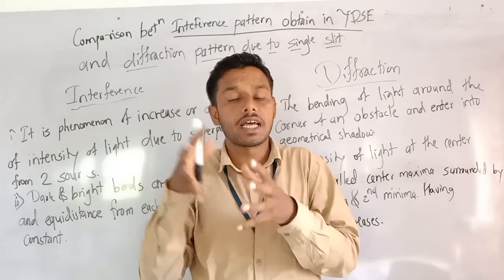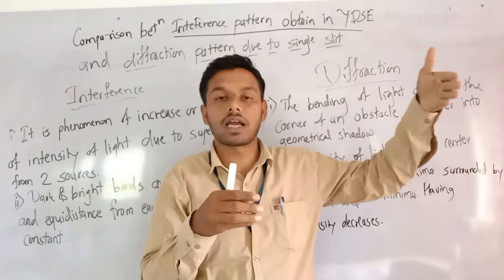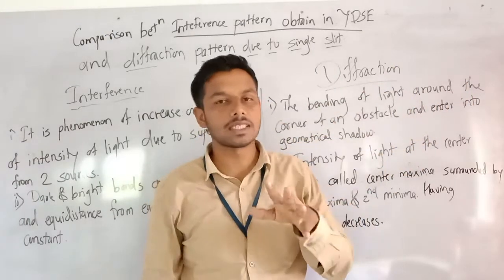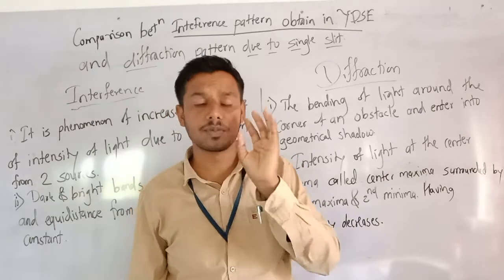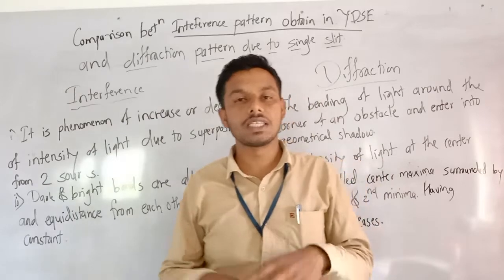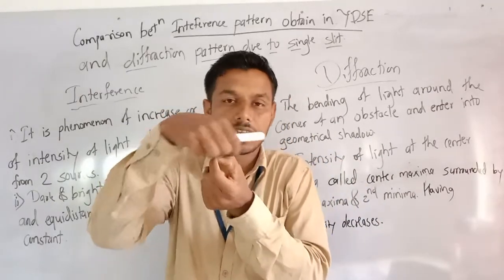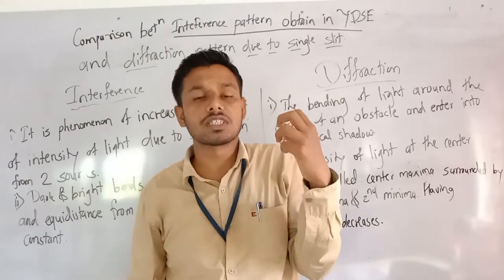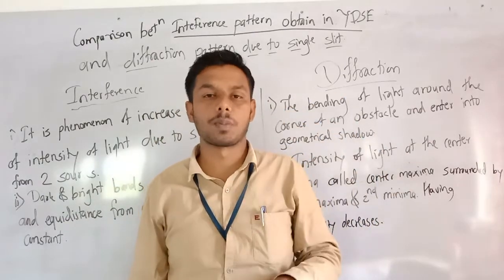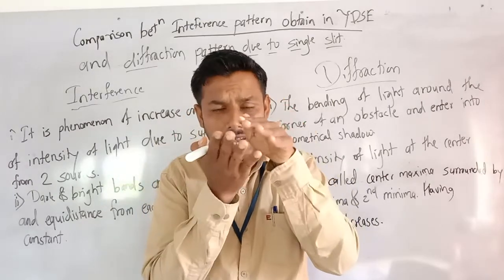In Young's double slit experiment there are two coherent sources through which we pass light, and an interference pattern is produced. Next is diffraction — what is diffraction? It is the bending of light around the edge of an obstacle. This produces a diffraction pattern, which has a higher intensity point at the center.